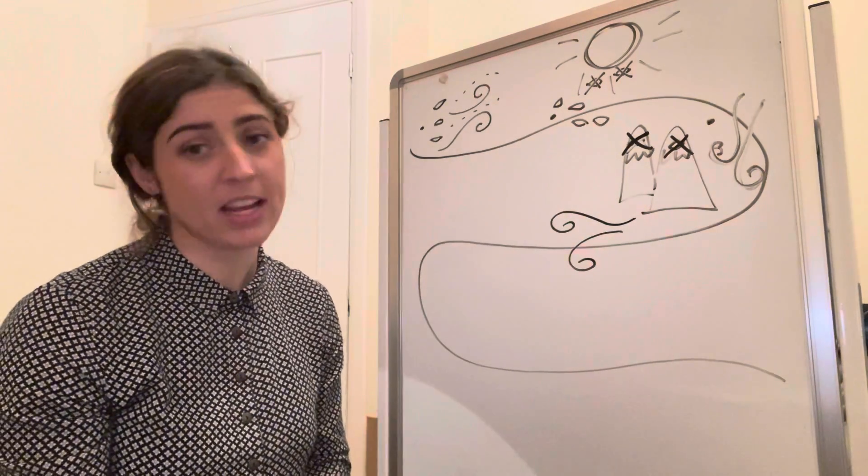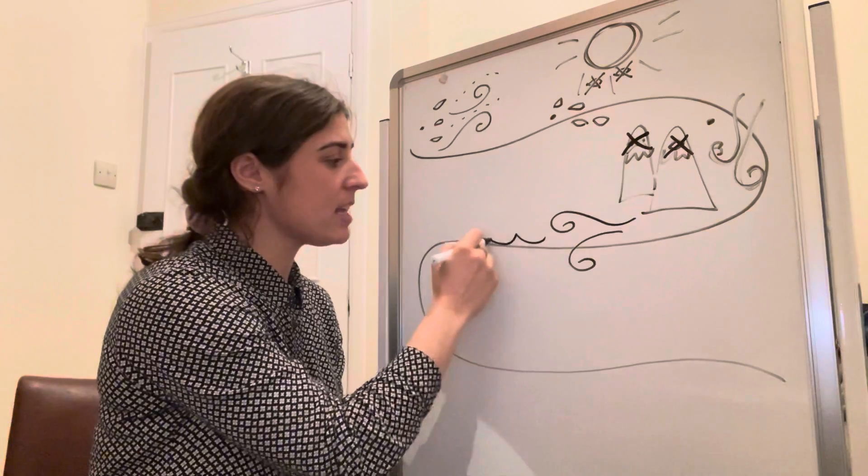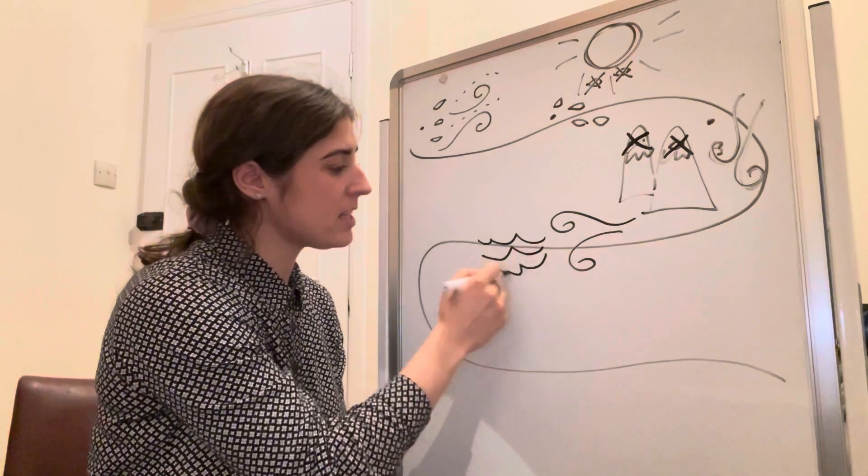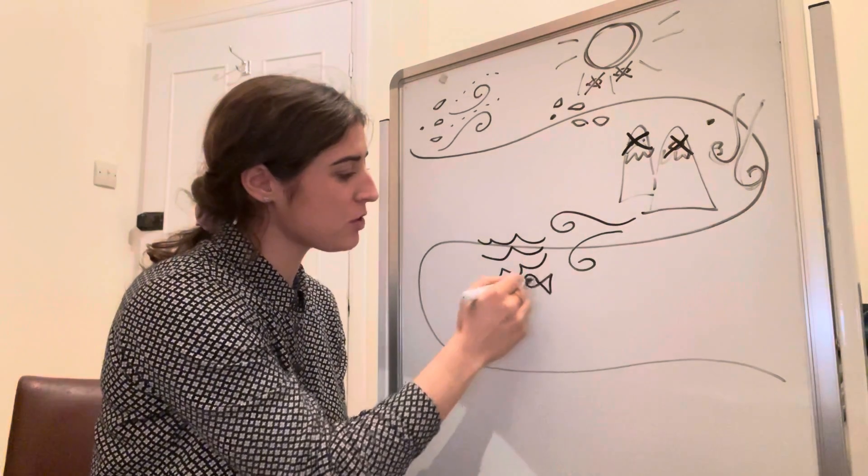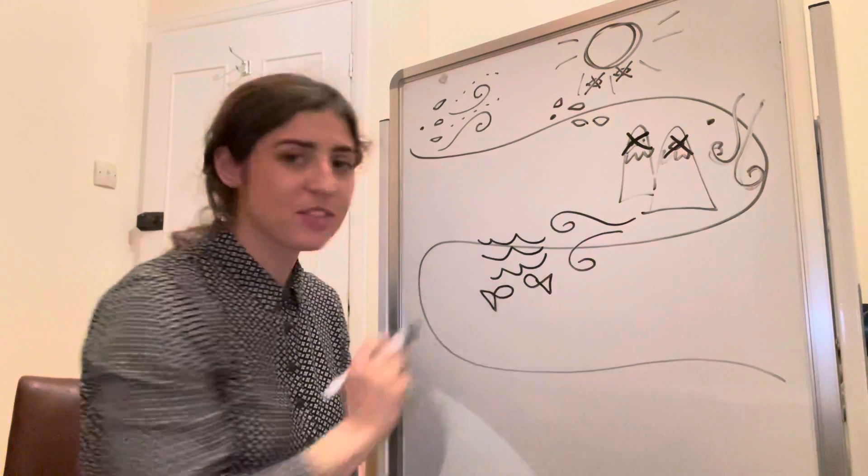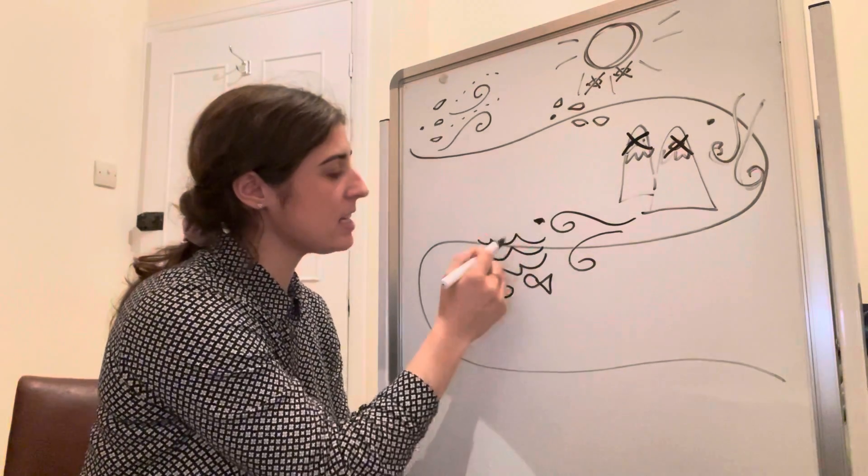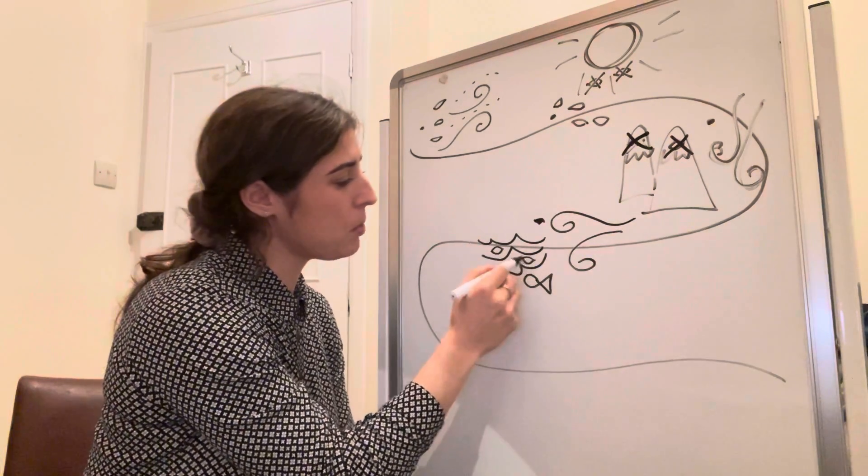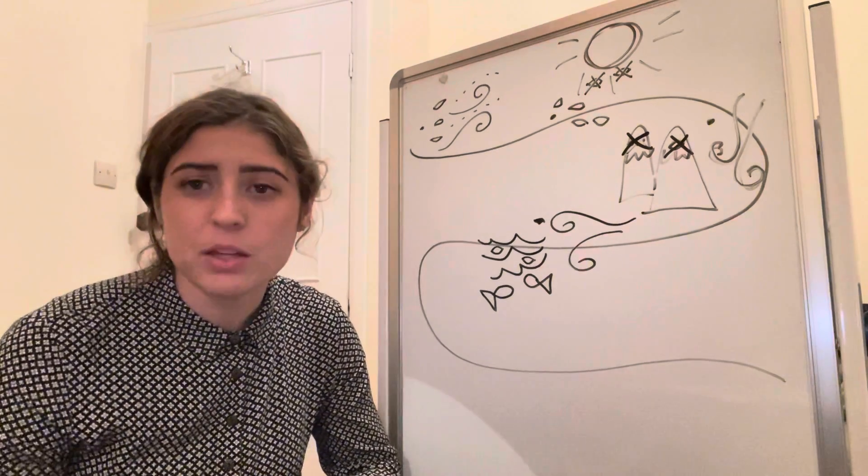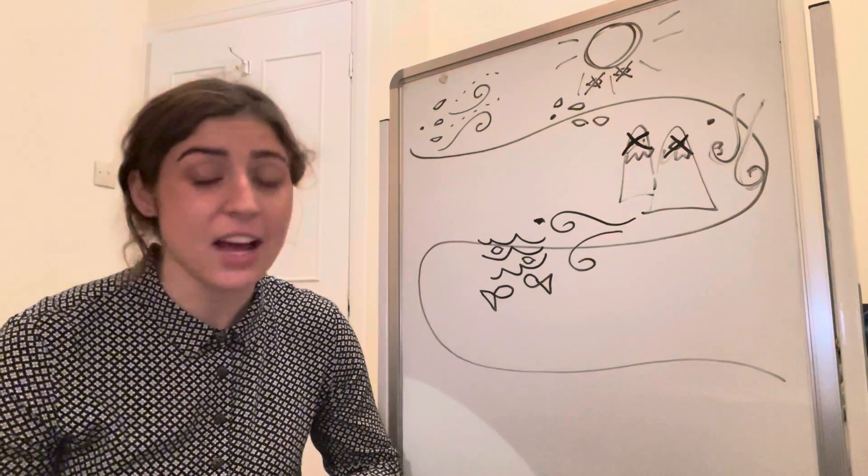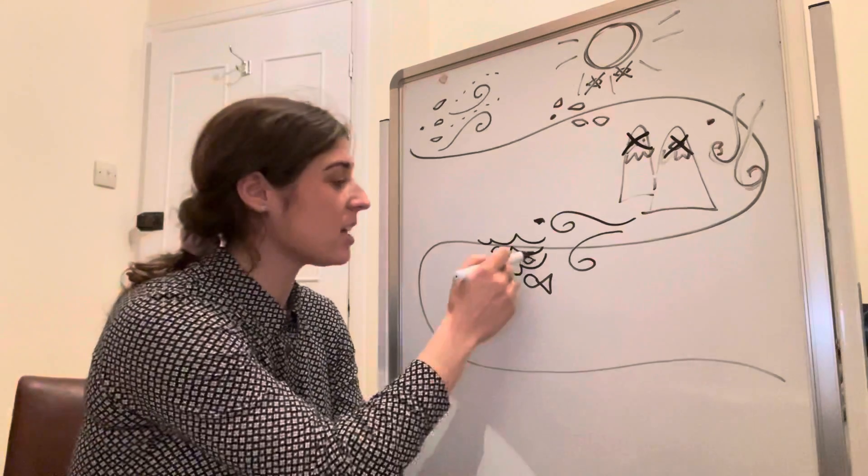And they go into the sea. So I'm going to draw here the sea with some fish down the bottom. There's my fish, and here's the baby seed, the tiny seed, and some seeds go in the water.